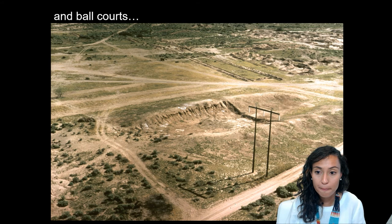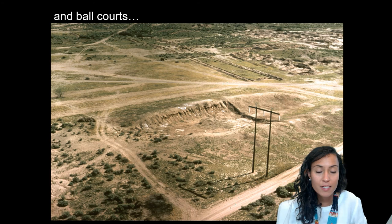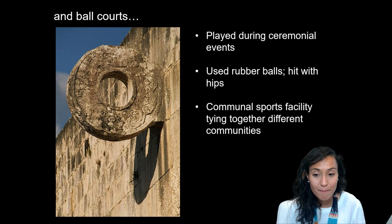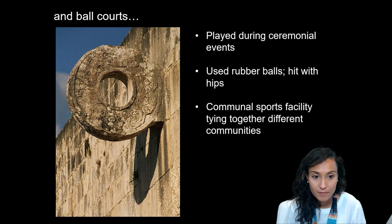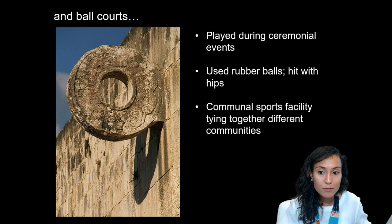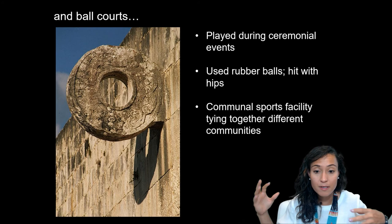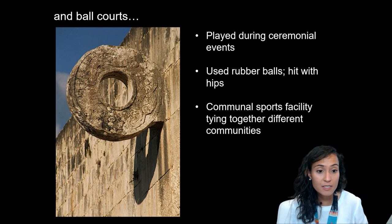In addition to extensive canal systems, we have evidence for monumental architecture — specifically the development and construction of ball courts. At Snake Town there are two giant ball courts with ramps from either end leading to the court floor. Over 200 ball courts have been identified in the Ho'okam region. These resemble structures found in Mesoamerica, and archaeologists hypothesize they were used for a similar ball game involving a rubber ball put through loops or holes — somewhat like modern basketball. These ball courts were associated with huge ceremonial events intended to bring different communities together.